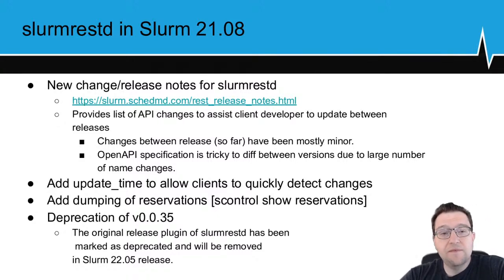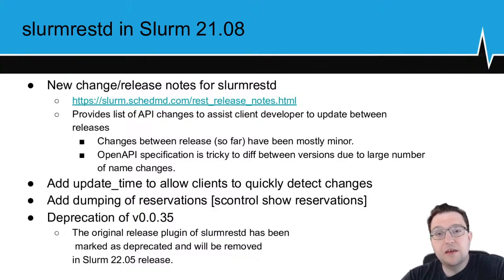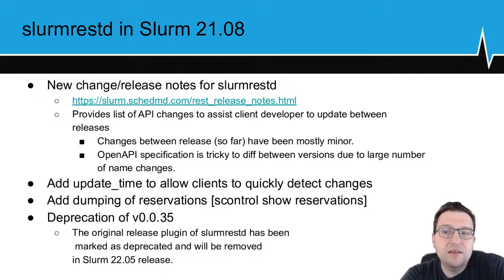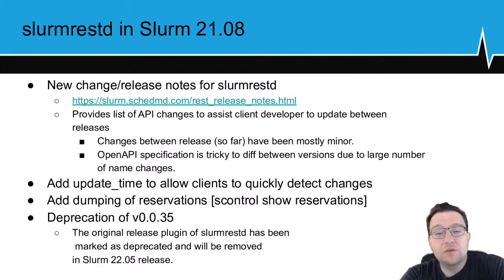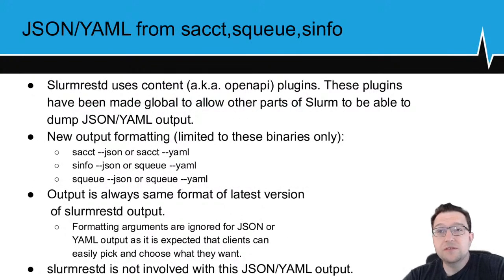Hopefully that makes everyone's life easier when updating. Another minor change is that many queries now allow you to provide an update time, so you can tell if anything's changed since the last update and ignore it until an actual change occurs. We've also added the ability to dump reservations. And notably, the V0.0.35 plugin has been tagged as deprecated — it has not been removed yet, but will be removed in 22.05, so please upgrade clients to use at least 0.0.36 or 0.0.37. I suggest always using the latest plugin.